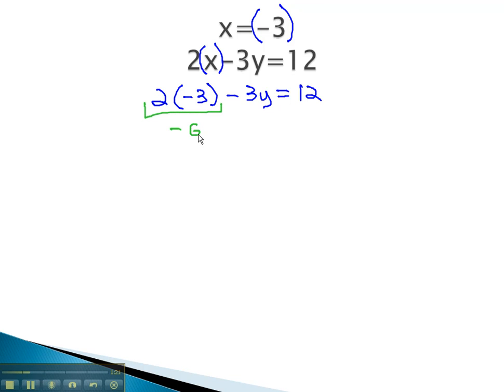Multiplying those values gives us negative 6 minus 3y equals 12. We can add 6 to both sides as we work to isolate the y, and we get negative 3y is equal to 18. Dividing both sides by negative 3, we find y is equal to negative 6.